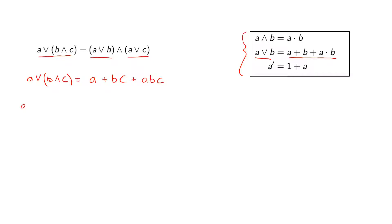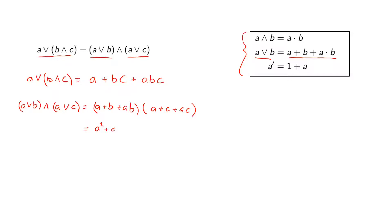For the right-hand side, we write (A OR B) AND (A OR C), which equals (A plus B plus AB) times (A plus C plus AC). Expanding this gives A squared plus AC plus A squared C plus AB plus BC plus ABC plus A squared B plus ABC plus A squared BC.